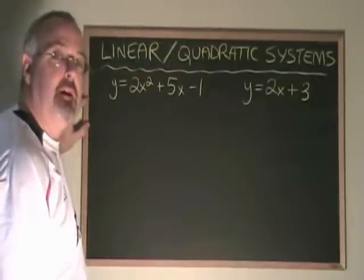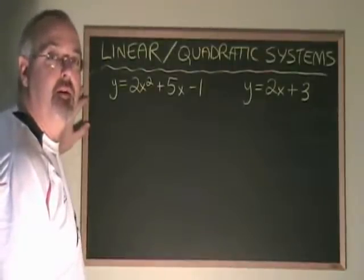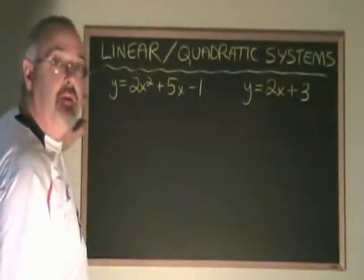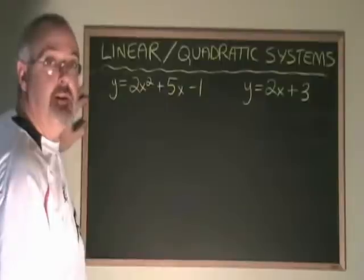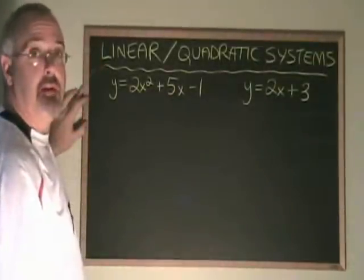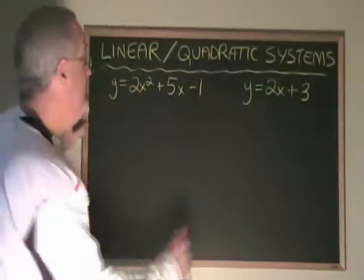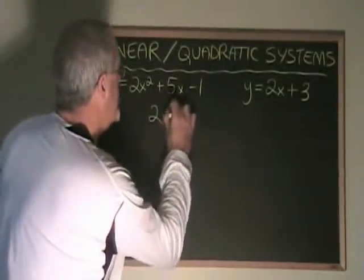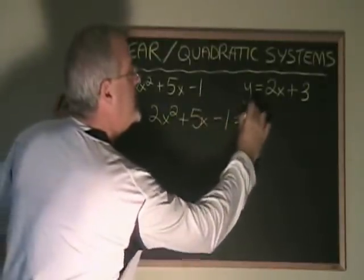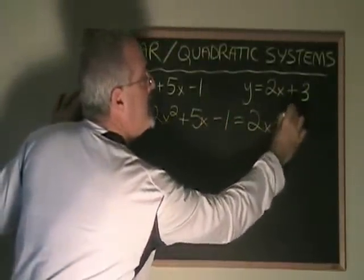Let's look at another system of linear and quadratic equations. In this case, the quadratic is y equals 2x squared plus 5x minus 1 and the linear is y equals 2x plus 3. Let's compare them. 2x squared plus 5x minus 1 equals 2x plus 3.